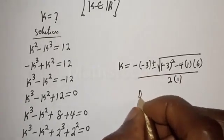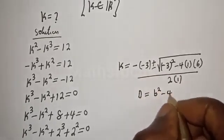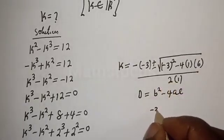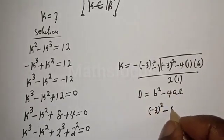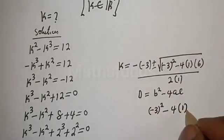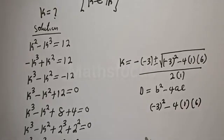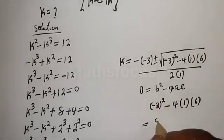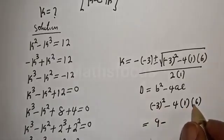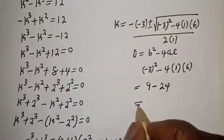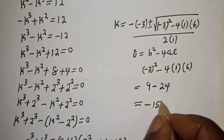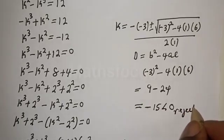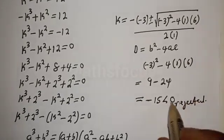The discriminant is b squared minus 4ac. Then minus 3 squared minus 4 times 1 times 6 equals 9 minus 24, which equals minus 15. This is less than 0, so this case is rejected because there is no real solution here.